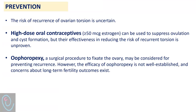Finally, regarding prevention, the risk of recurrence of ovarian torsion is uncertain. High-dose oral contraceptives can be used to suppress ovulation and cyst formation; however, their effectiveness in reducing the risk of recurrent torsion is unproven. Another preventive measure is oophoropexy.